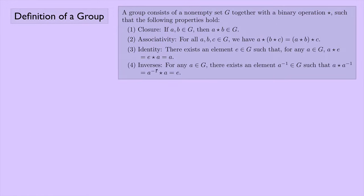Let's look at some examples. One way people write groups is in angle brackets, where in the first place they write the set G more specifically, and in the second spot they put the binary operation. That's a compact way of specifying a group together with its binary operation. A lot of times people get a little sloppy with notation and just specify the set, as long as the binary operation is understood. But for now, I'm going to always specify the set together with the binary operation.